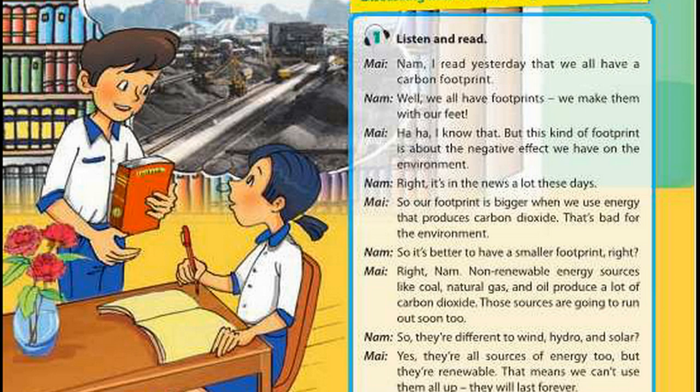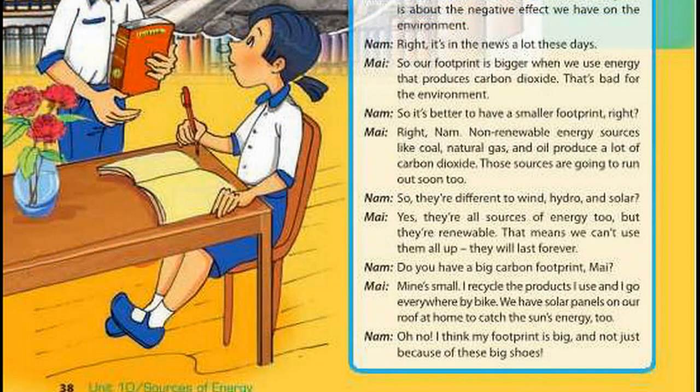Right, Nam. Non-renewable energy sources like coal, natural gas and oil produce a lot of carbon dioxide. Those sources are going to run out soon too. So they're different to wind, hydro and solar? Yes, they're all sources of energy too, but they're renewable. That means we can't use them all up — they will last forever. Do you have a big carbon footprint, Mai?